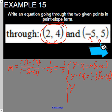Clean this up. We have y minus 4 equals negative 1 over 7 times x minus 2. And this is our equation in point-slope form.